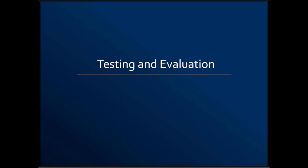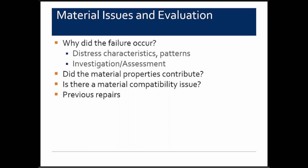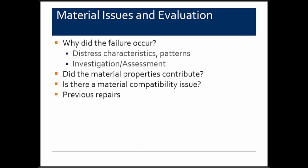Testing and evaluation: key questions are why did the failure occur, and did material properties contribute? From a field testing perspective for terracotta facades, four things can be considered: strain relief testing — which WJE has done dating back to the 1970s on the Woolworth Building — use of a metal detector, infrared thermography, and sounding. Strain relief testing involves attaching strain gauges then cutting the piece loose below a support point to measure stress.